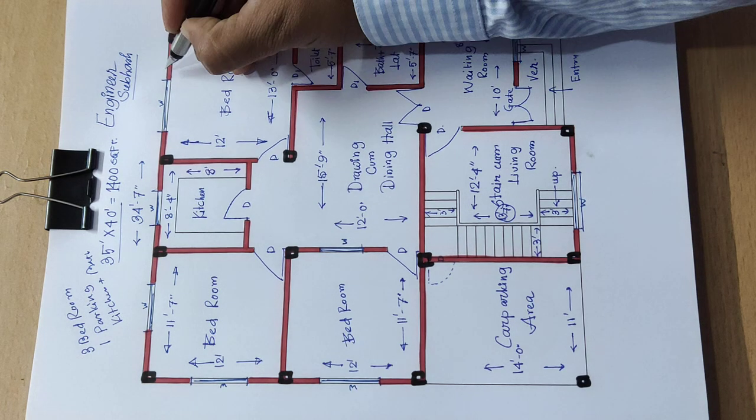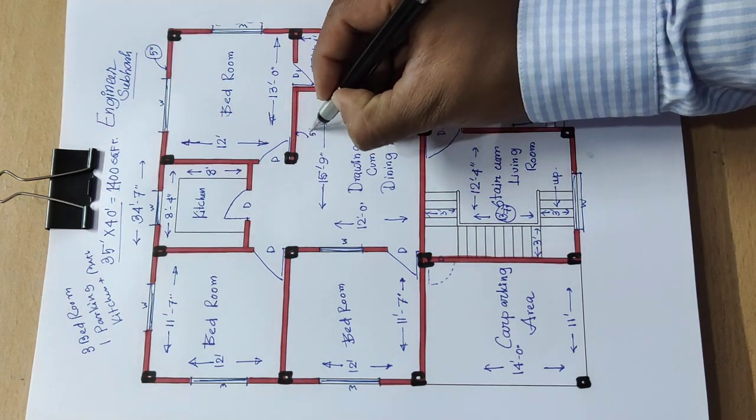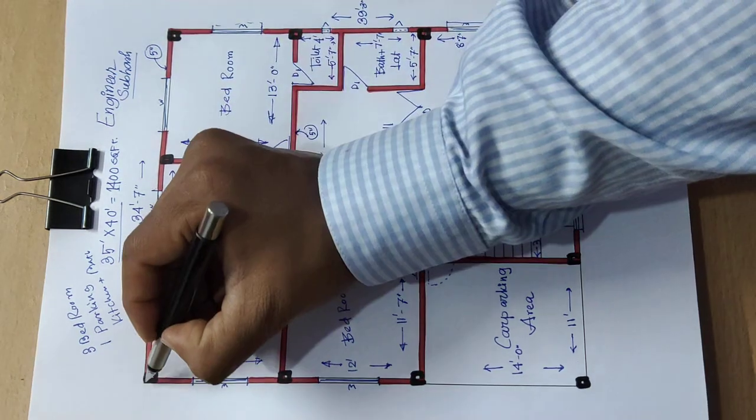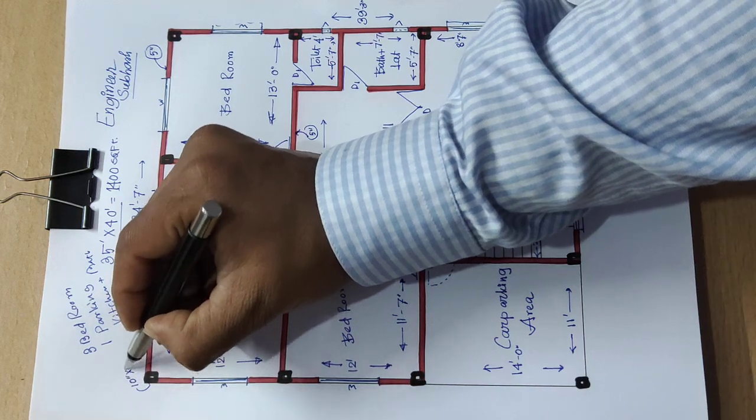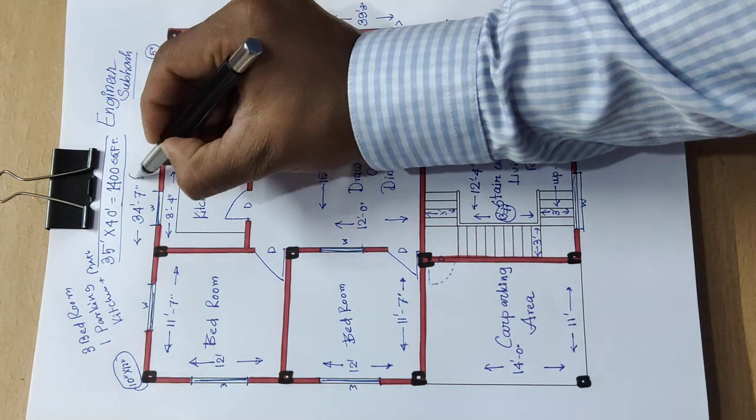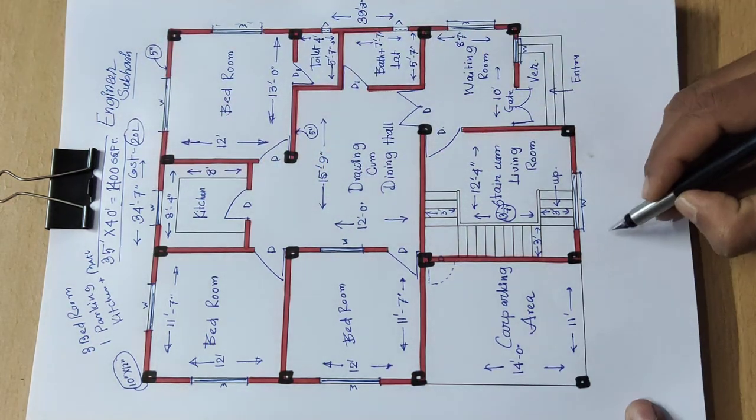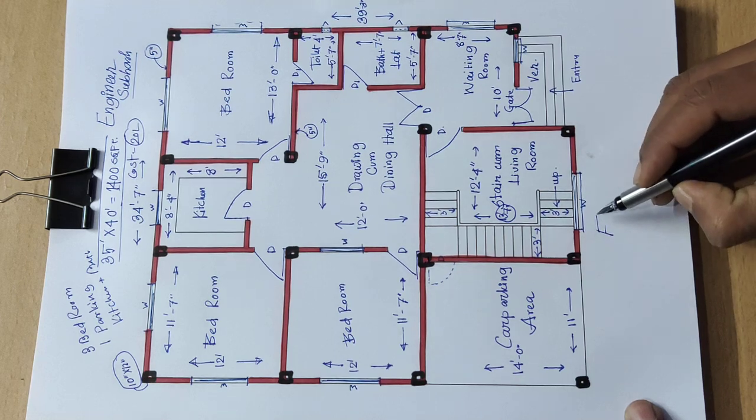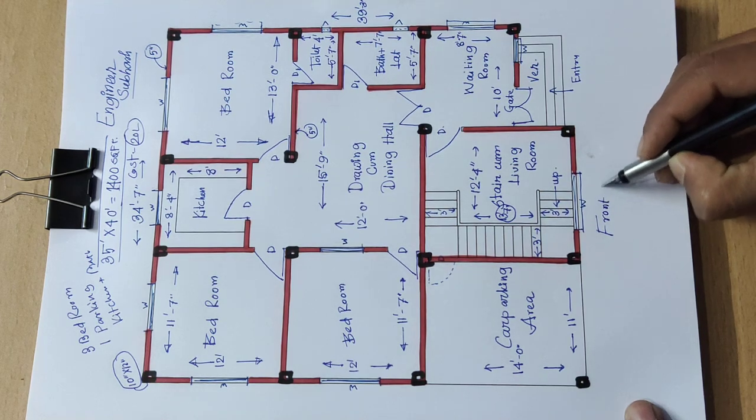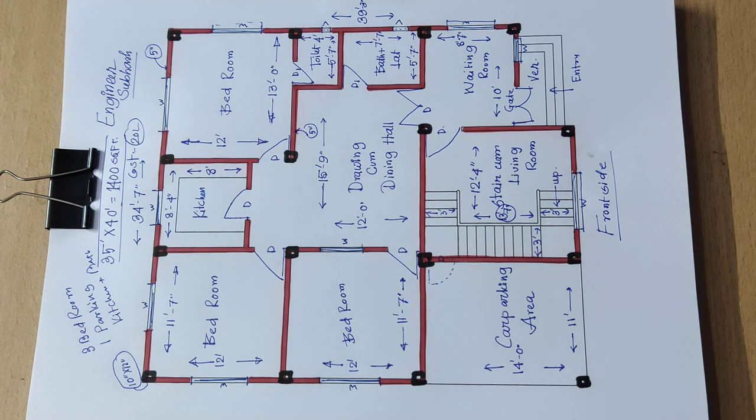Outside wall is 5 inch and inside wall is 5 inch. Column size is 10 by 12 inch. Total building cost is around 20 lakh plus. According to your land, you can set the front side here. This plan and design will be good. Please like and share.